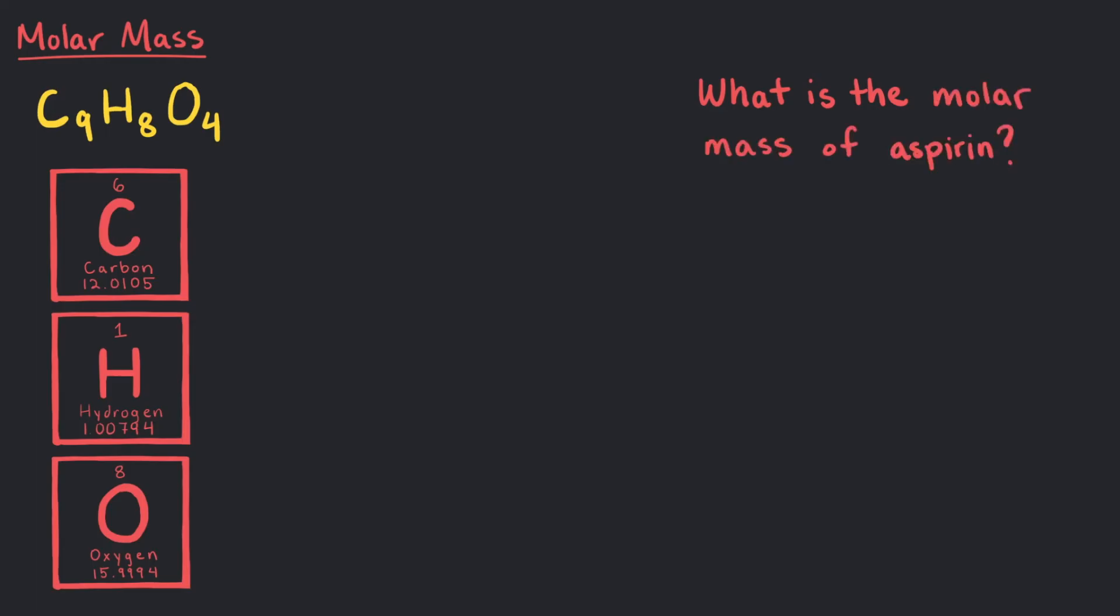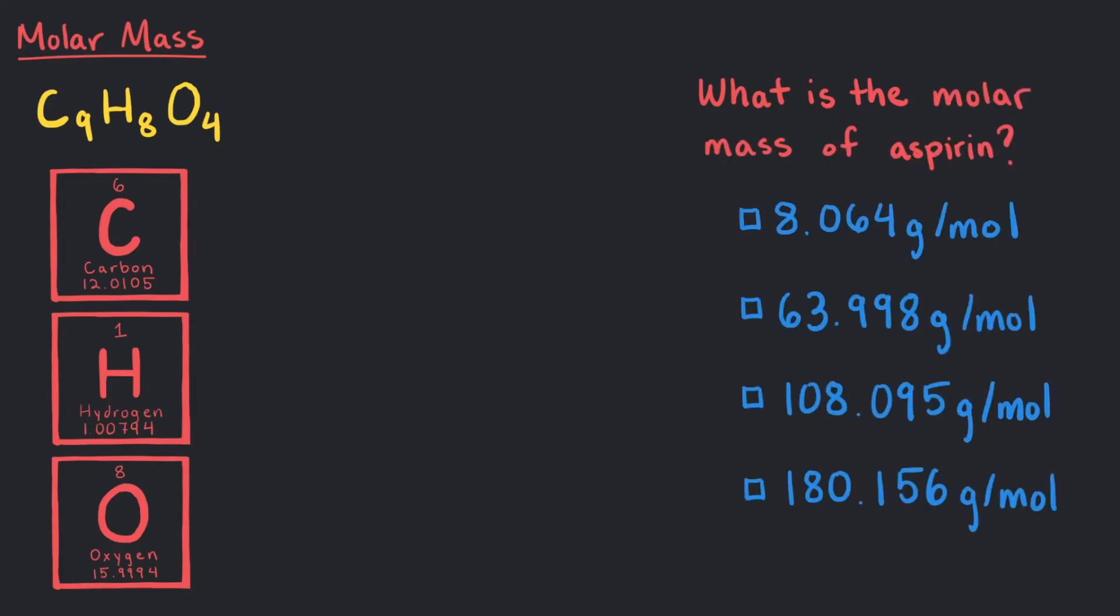What is the molar mass of aspirin? Each carbon atom has an atomic weight of 12.0105U. So 9 atoms times 12.0105U gets us 108.095U.